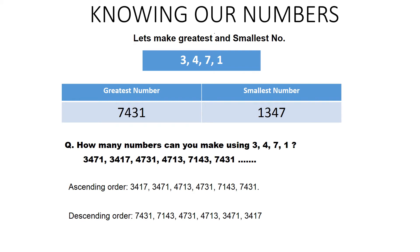Let's do some more exercise. The next question is: how many numbers can you make using the digits 3, 4, 7, and 1? You have to use all four digits to make different numbers. Here are some examples: 3471, 3417, 4731, 4713, 7143, 7431, and so on.